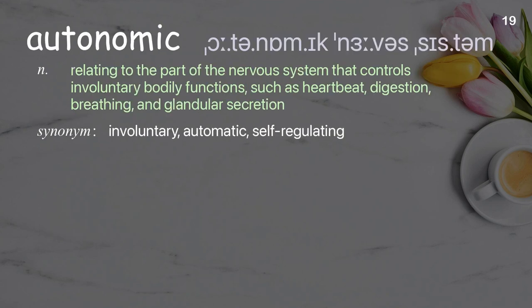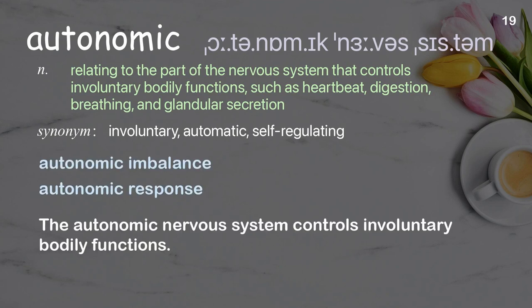Autonomic: relating to the part of the nervous system that controls involuntary bodily functions, such as heartbeat, digestion, breathing, and glandular secretion. Examples: autonomic imbalance, autonomic response. The autonomic nervous system controls involuntary bodily functions.